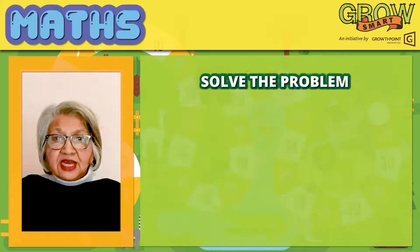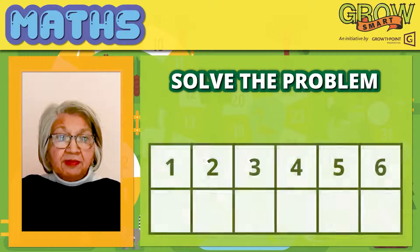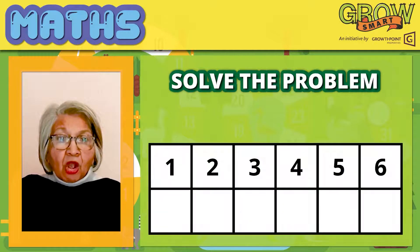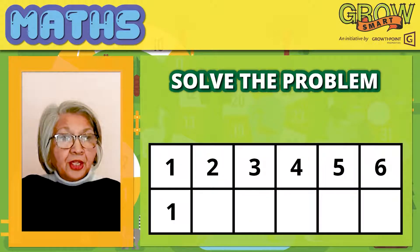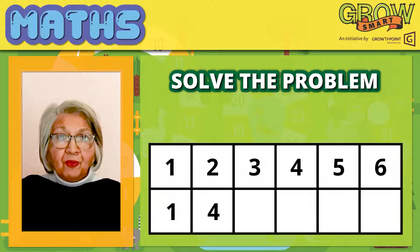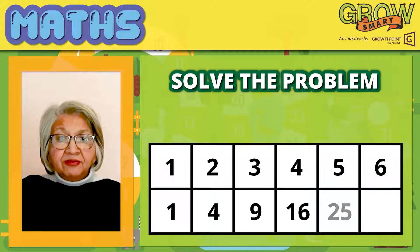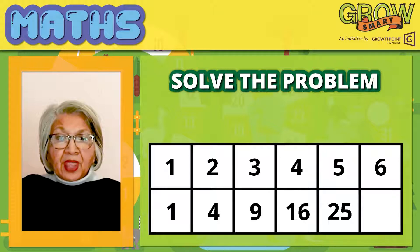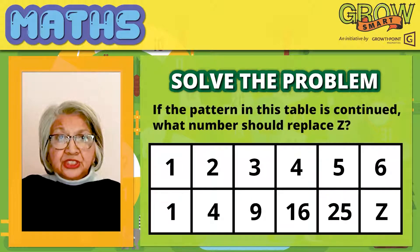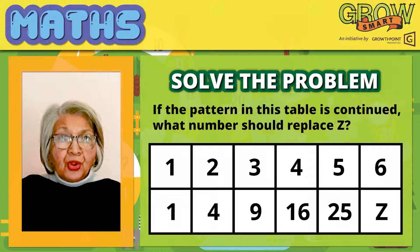Number five reads like this. It's in a table. In column one I have 1, in column two I have 4, in column three I have 9, in column four I have 16, in column five we have 25, and in column six we have the letter Z. If the pattern in the table is continued, what should replace Z?